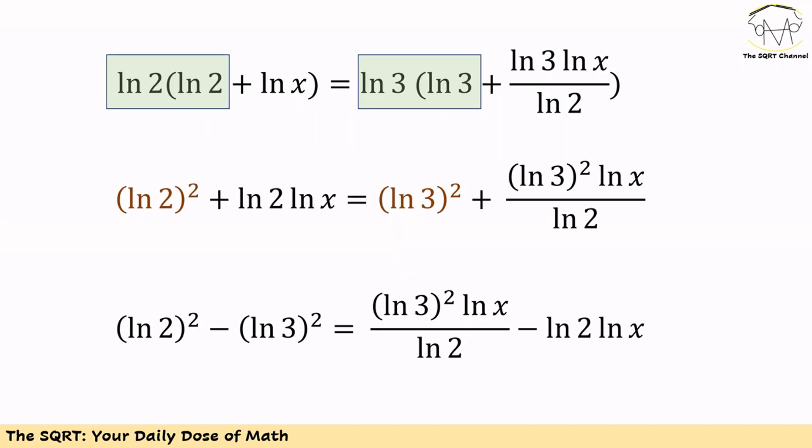We will simplify it by writing ln 2 times ln 2 as ln 2 squared, and also ln 3 times ln 3 as ln 3 squared. Now let's rearrange the equation to have ln x on just one side of the equation.